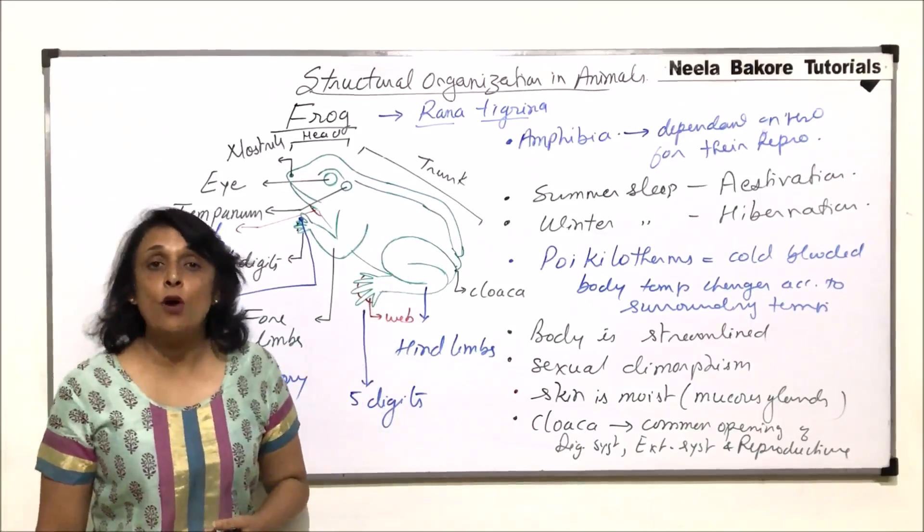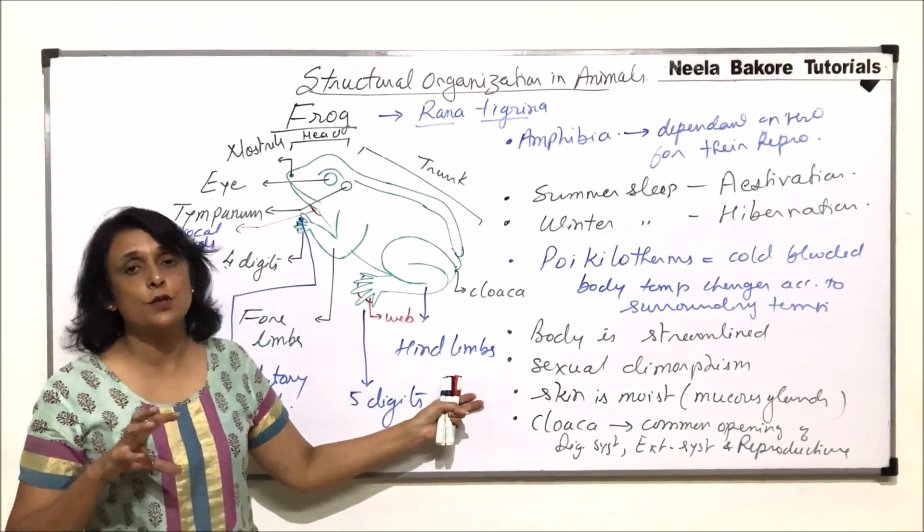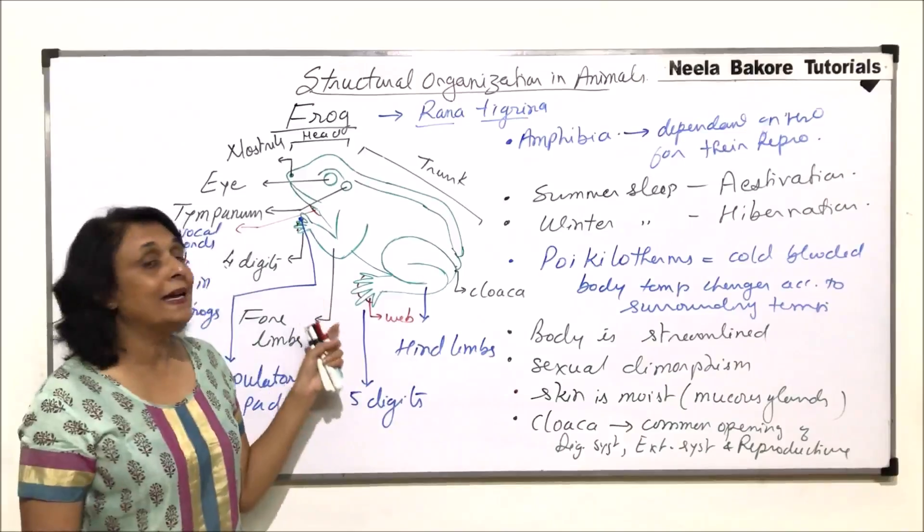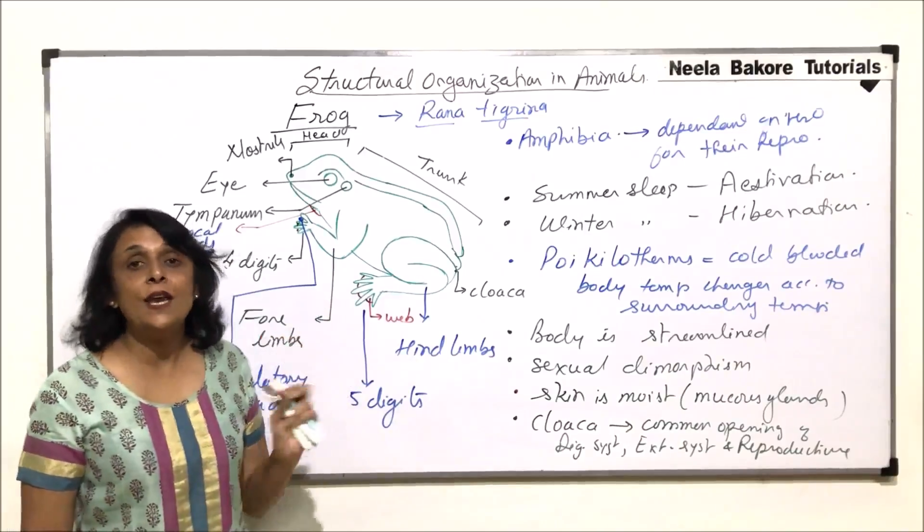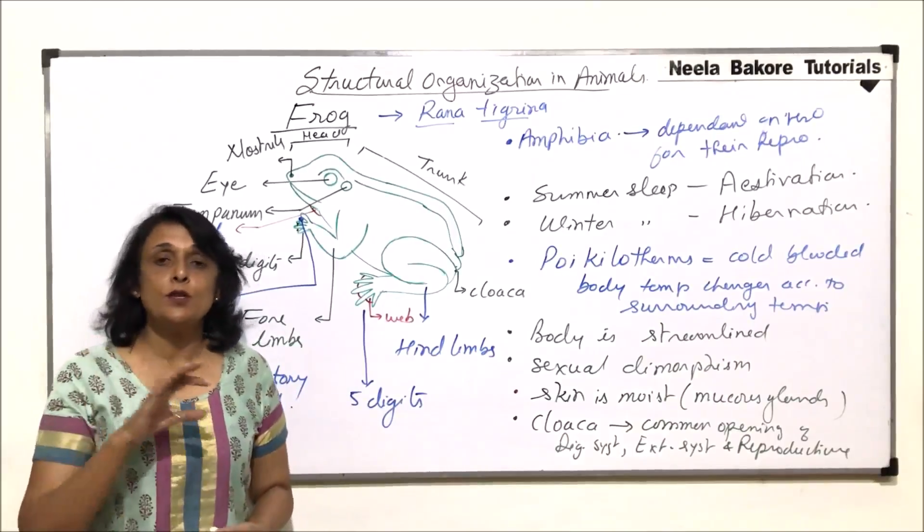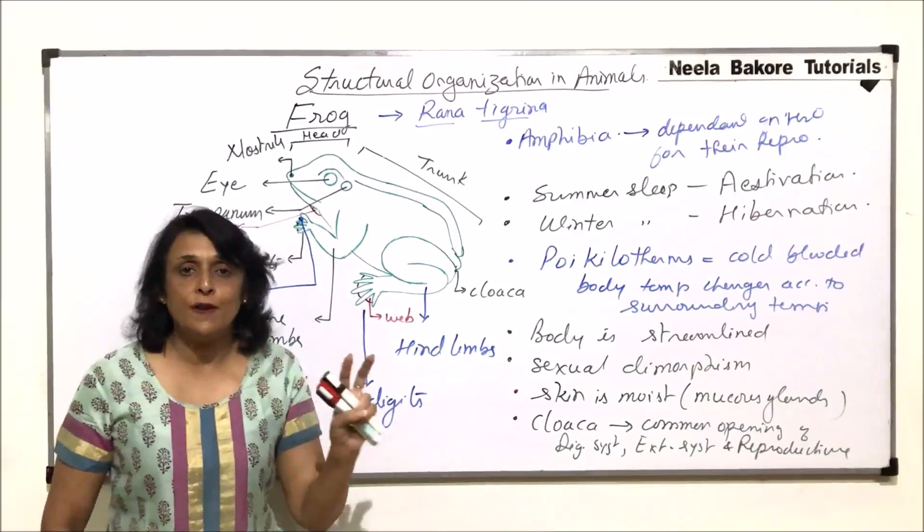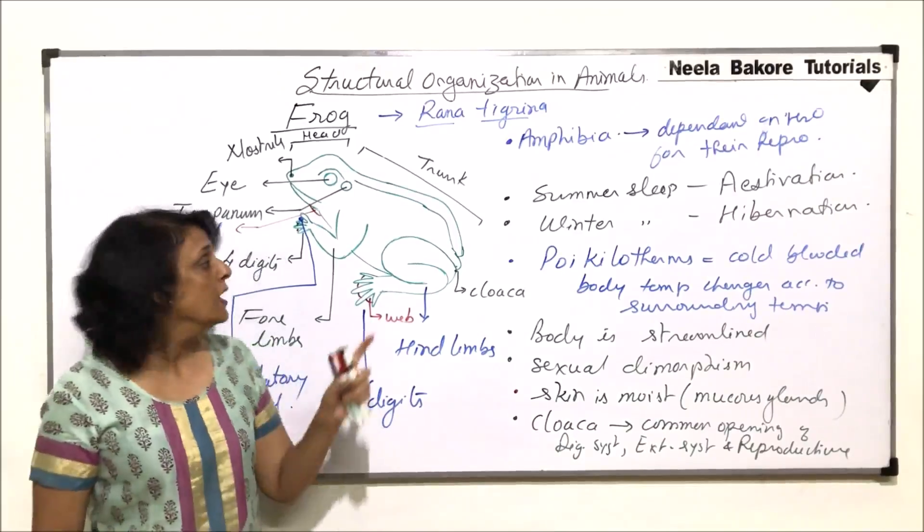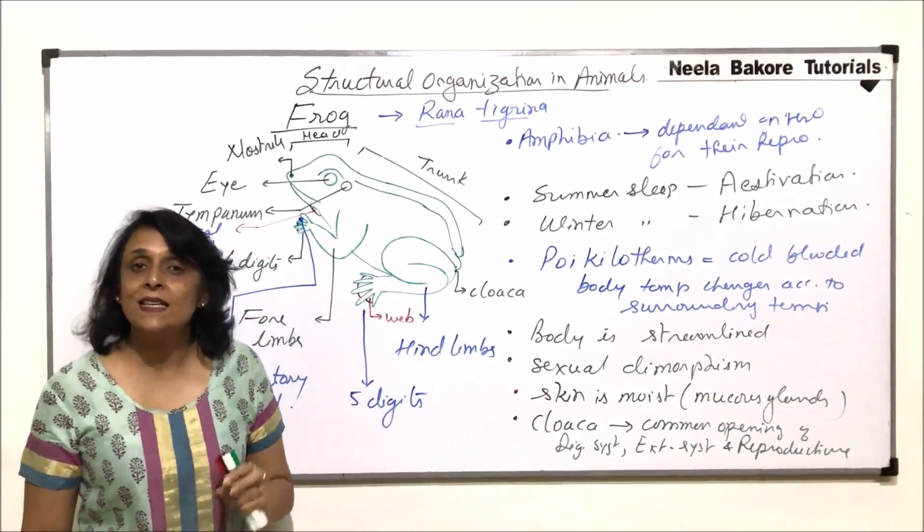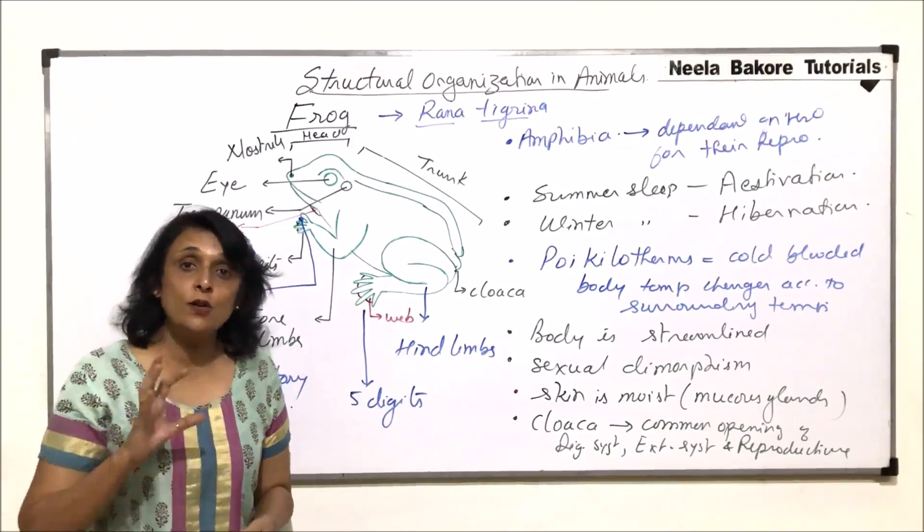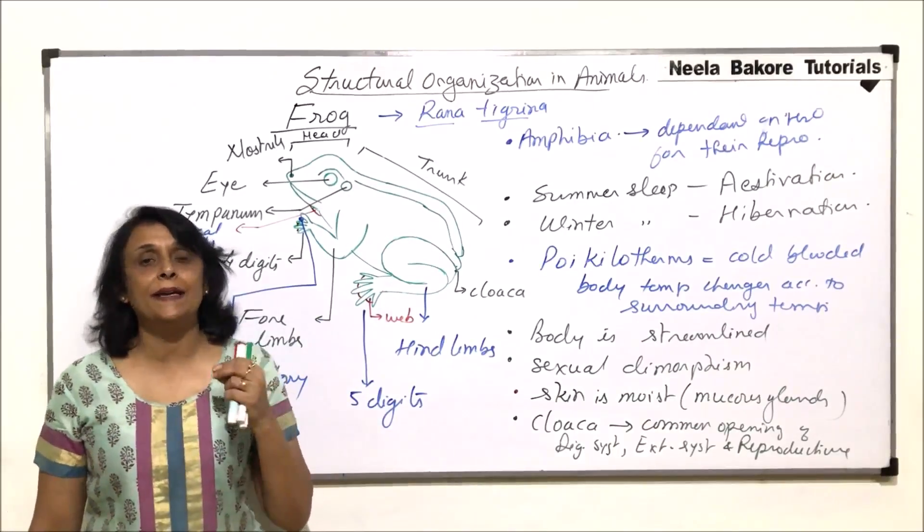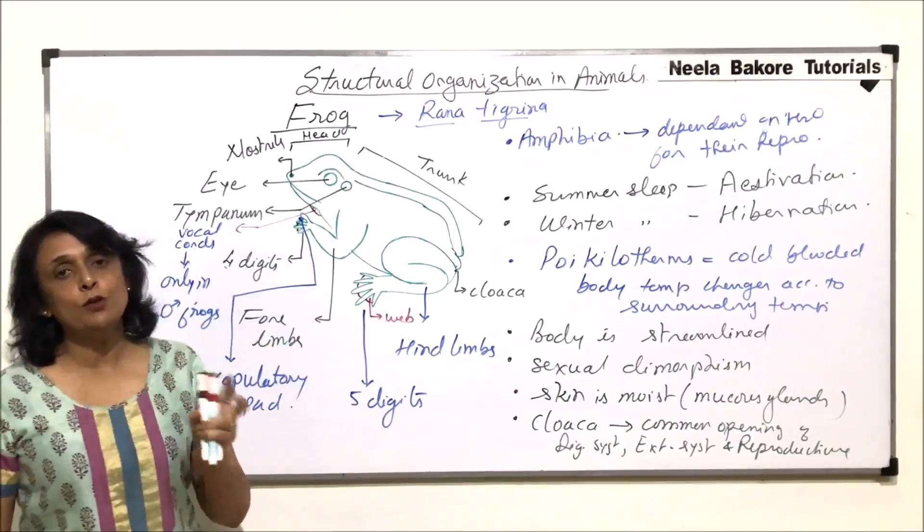So externally when we see frogs, the skin is moist because of this mucus glands which they have. They are normally greenish in colour and they are capable of changing the colour of their skin. And this property is called mimicry or because of this change in colour, they are able to camouflage or blend in their surrounding. Normally they are found in the green areas during rainy season and that is where their skin is greenish. But if they are sitting on the bark of the tree, the colour would slightly change to brownish.